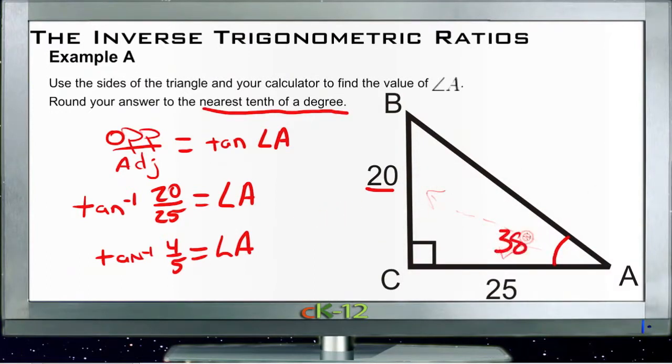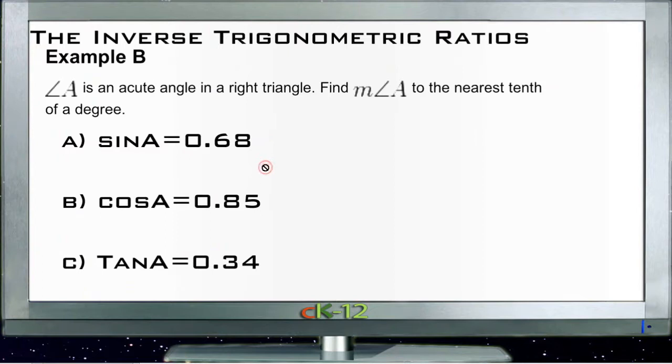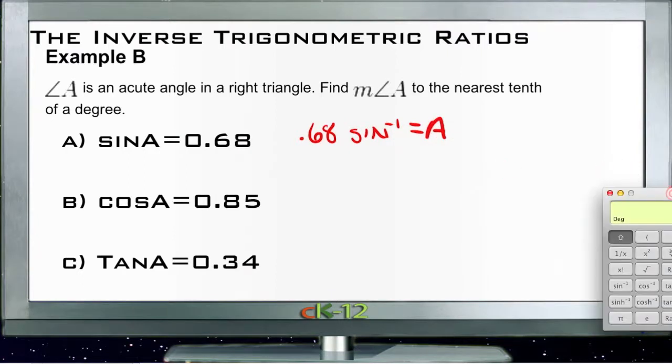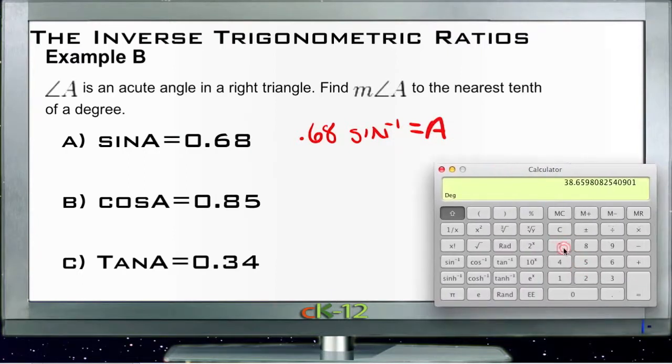Example B: Angle A is an acute angle in a right triangle. Find the measure of angle A to the nearest tenth of a degree. This one is just playing with those ratios. If we know that the sine of A is 0.68, then 0.68 times the inverse sine will be A.